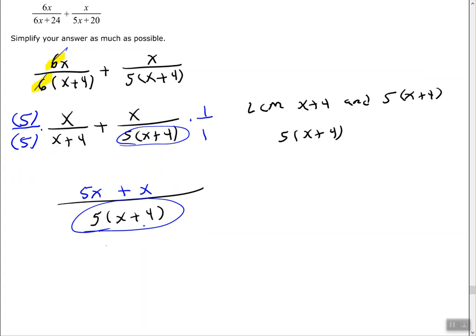If you can combine like terms, start simplifying using your algebra rules. I'm going to combine my like terms in my numerator: 5x plus 1x is 6x. The 6 and the 5 won't simplify, so 6x over 5 times x plus 4 is my final answer.